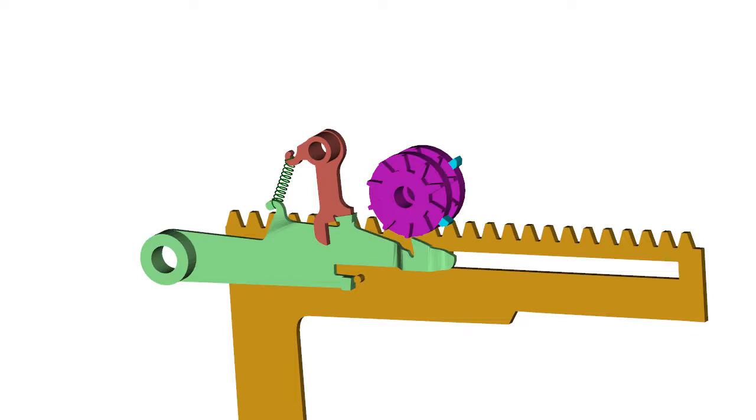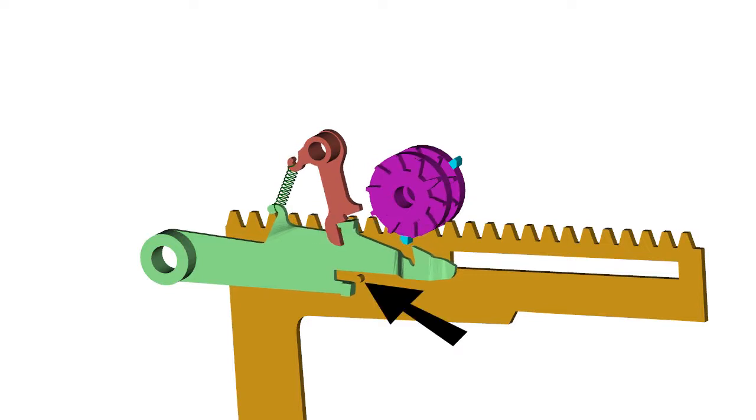Each accumulator wheel has a protruding tab. When a wheel passes from 9 to 0, its tab pushes against a camming surface on the transfer member of the next higher order column, depressing it sufficiently to slip past the carry latch and permit a pin on the higher order actuating rack to enter a notch in the transfer member and move the rack forward far enough to rotate the higher order accumulator by an additional unit.